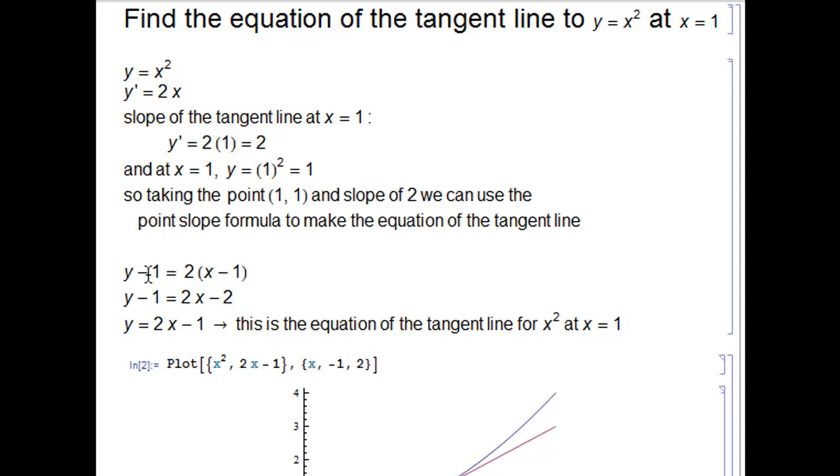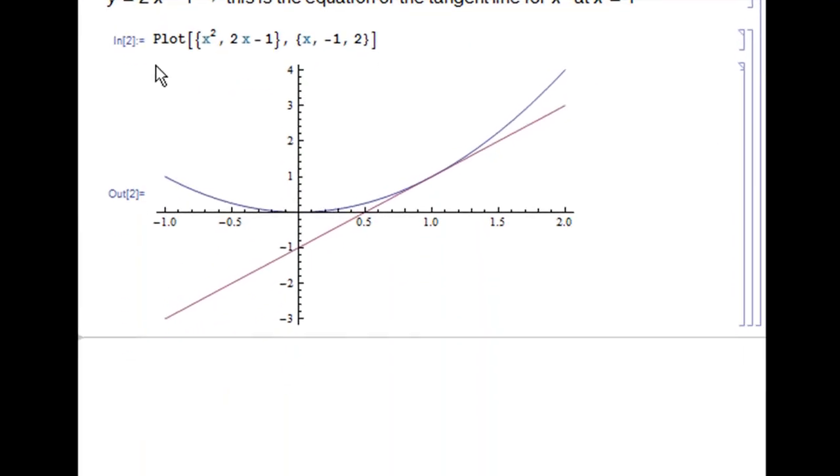Solving for y, we get y = 2x - 1. This is the equation for the tangent line to x² at x = 1. I made a graph to check our work. This is x² and this is 2x - 1, and you can see it looks like the tangent line, so we're good to go.